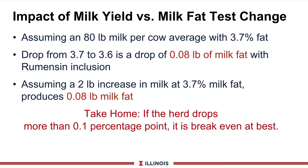Let's look at the impact of milk yield versus milk fat change using a case study. We assume a cow giving 80 pounds of milk per day with a 3.7% butterfat test. If rumensin drops the butterfat from 3.7 to 3.6%, that's a drop of about 8 hundredths of a pound of milk fat. However, if that cow also went up 2 pounds in milk, that additional milk would produce 0.8 hundredths of a pound of milk fat, negating the drop. So if a herd drops more than about a tenth of a point in milk fat percentage, it may be at break-even or may not be economical.